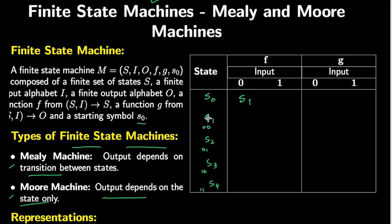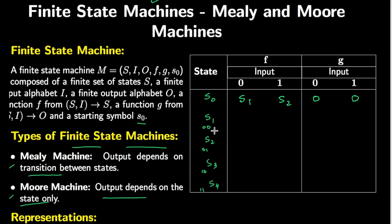If I am at s0 and I get a 0, I go to s1 because s1 corresponds to 0,0 and the output is 0. If I am at s0 and an input of 1 comes, I go to s2 and the output is still 0.